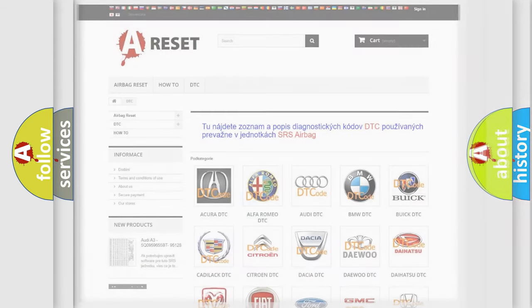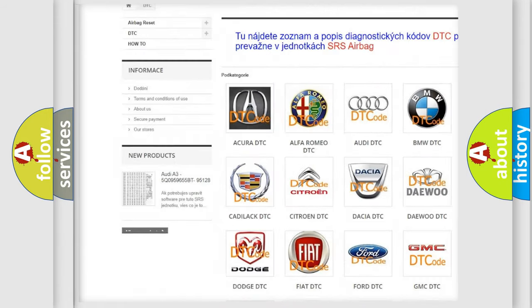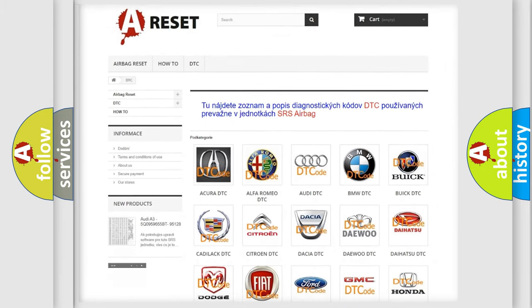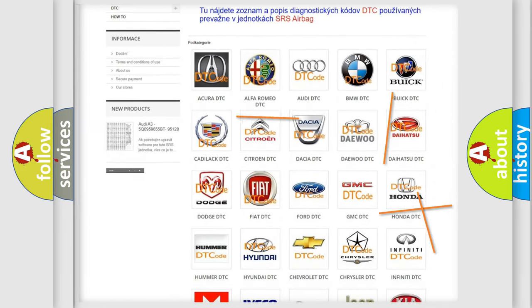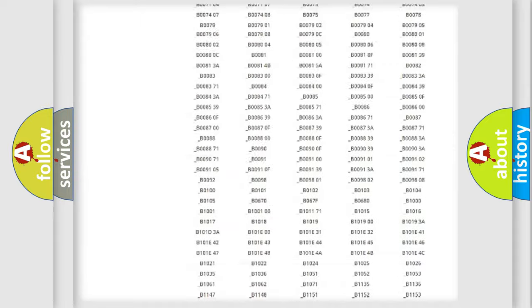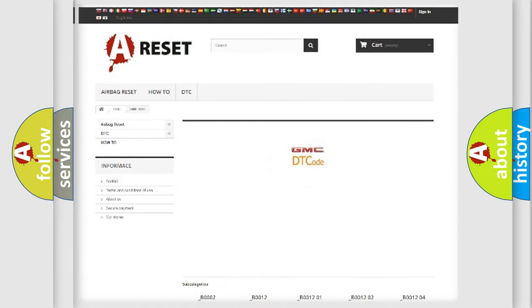Our website airbagreset.sk produces useful videos for you. You do not have to go through the OBD2 protocol anymore to know how to troubleshoot any car breakdown. You will find all the diagnostic codes that can be diagnosed in GMC vehicles, and also many other useful things.